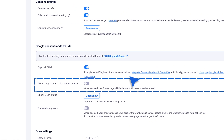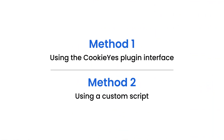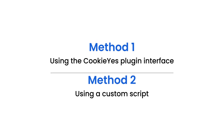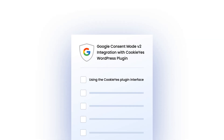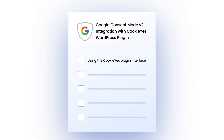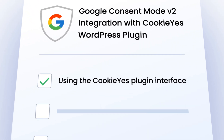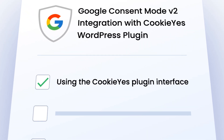You have two ways to integrate Google Consent Mode with the Cookie Yes plugin. Method 1: Using the Cookie Yes plugin interface. We recommend using this method for simplicity.